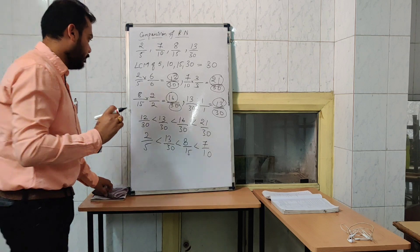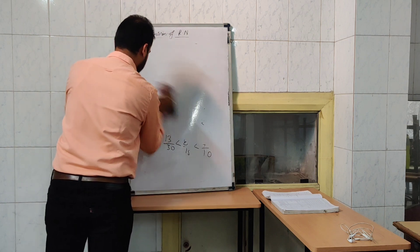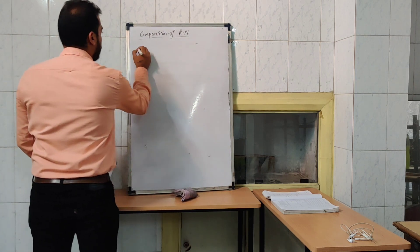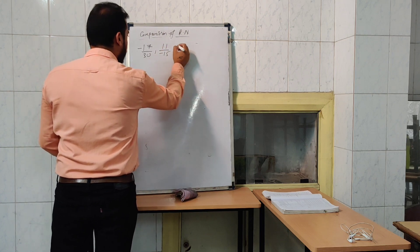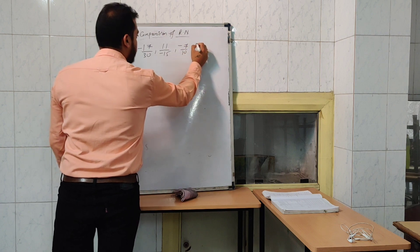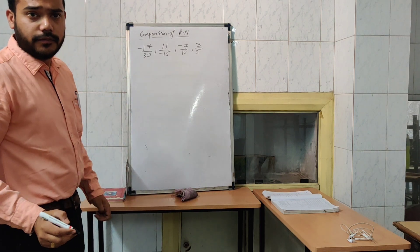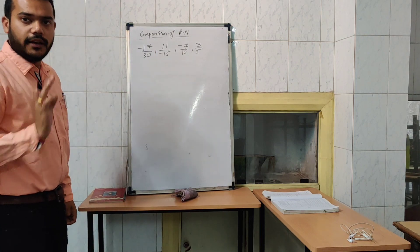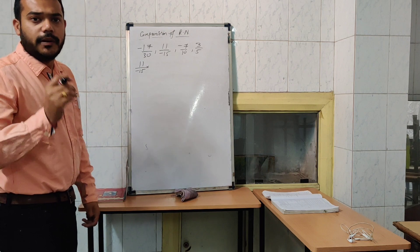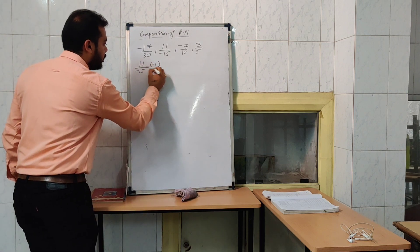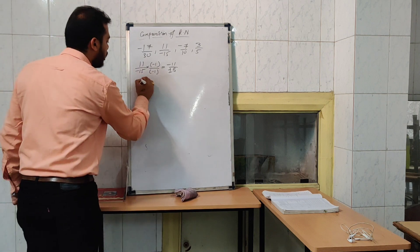Let us take one more sample: minus 17 by 13, 11 by minus 15, minus 7 by 10, and 3 by 5. First, we have to check whether the denominator is positive or not. Here, one rational number has a negative denominator. To make it positive — for 11 by minus 15, we multiply by minus 1 — that will be minus 11 by 15.